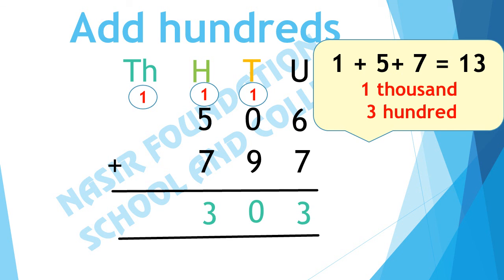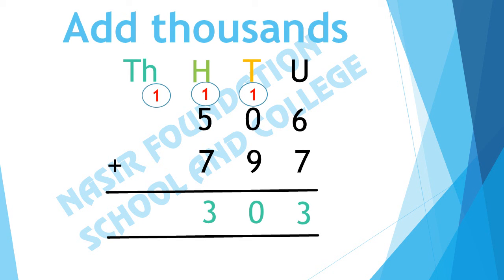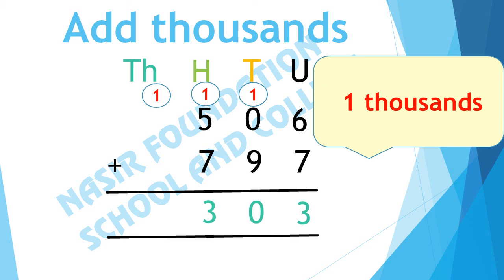Now we will add thousands. In thousands column there is only 1. There is nothing to add in it. So we have 1,000 here. And we will write 1,000 in the thousands column. 1,303 is the sum.